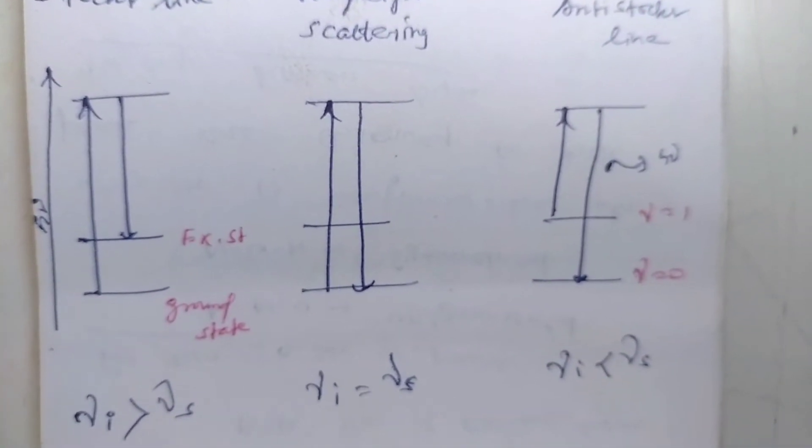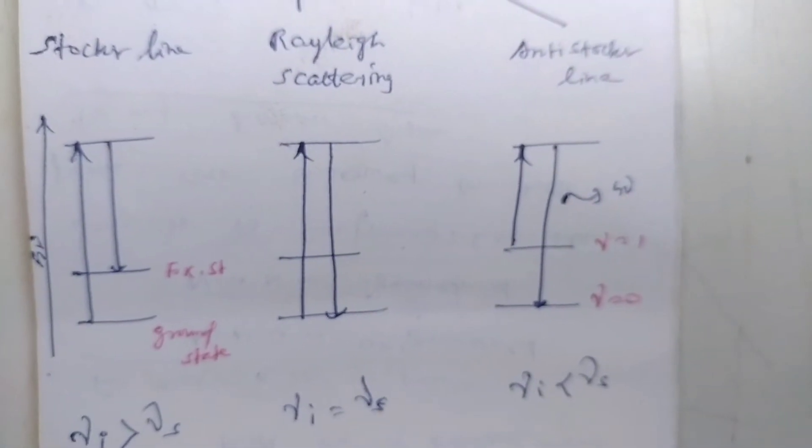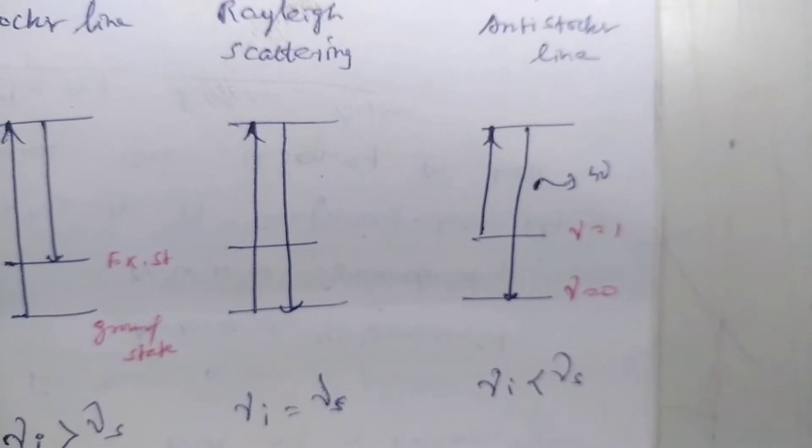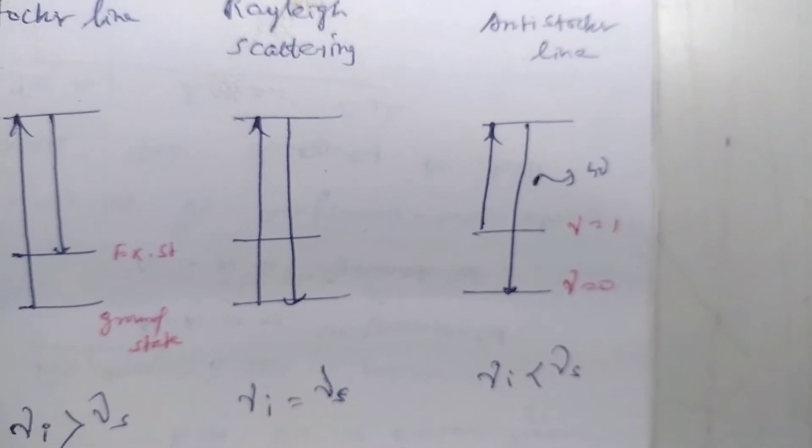Incident frequency equals scattered frequency is Rayleigh scattering. Incident frequency less than scattered frequency is called anti-Stokes line.